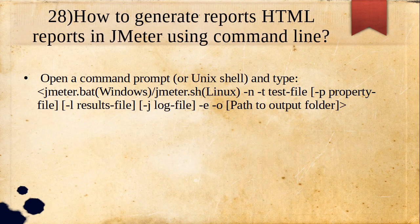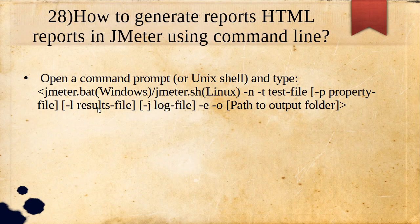How do you generate HTML reports in JMeter using the command line? Open the command prompt and type: jmeter.bat -n -t followed by the test file, then -l (mandatory), -e to generate the dashboard, and -o to specify where to generate the dashboard. The -l flag is mandatory because the HTML report is generated based on the CSV results file.